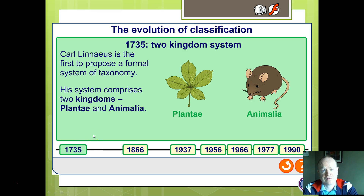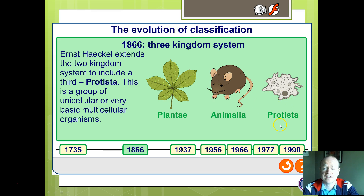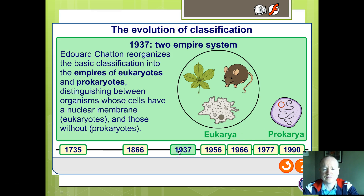Linnaeus, we mentioned previously, was the first person to come up with an idea of classifying by taxonomy — putting things into groups. He just had Plantae and Animalia, in other words, animals and plants. It was then extended into a three-kingdom system with single-celled organisms, adding in the Protista, or sometimes described as Protoctista — so plants, animals, and single-celled organisms.